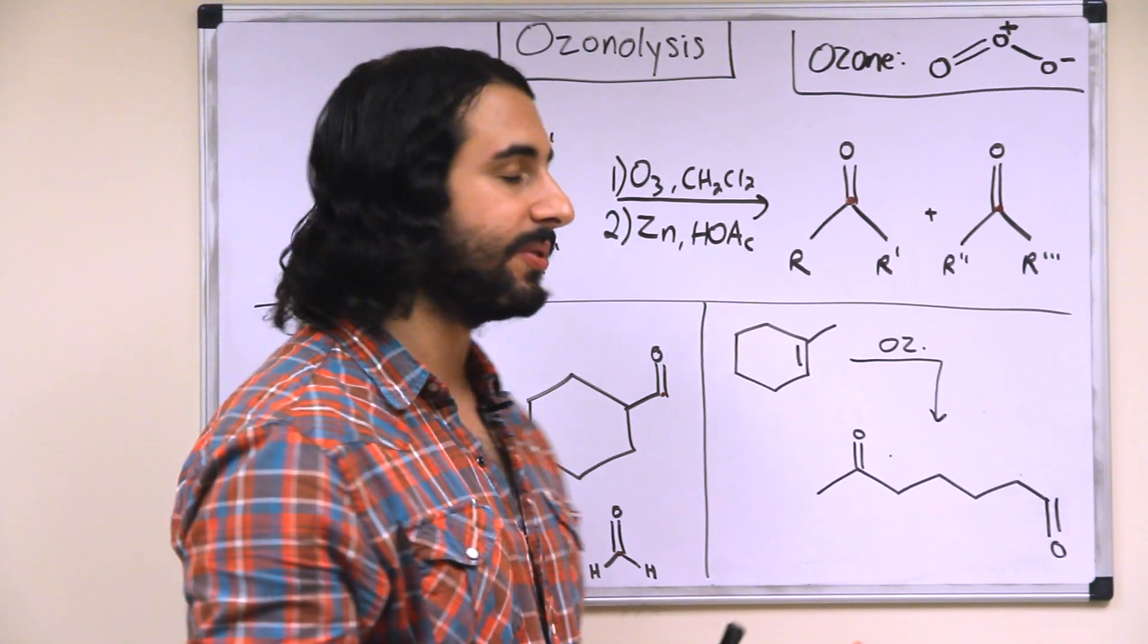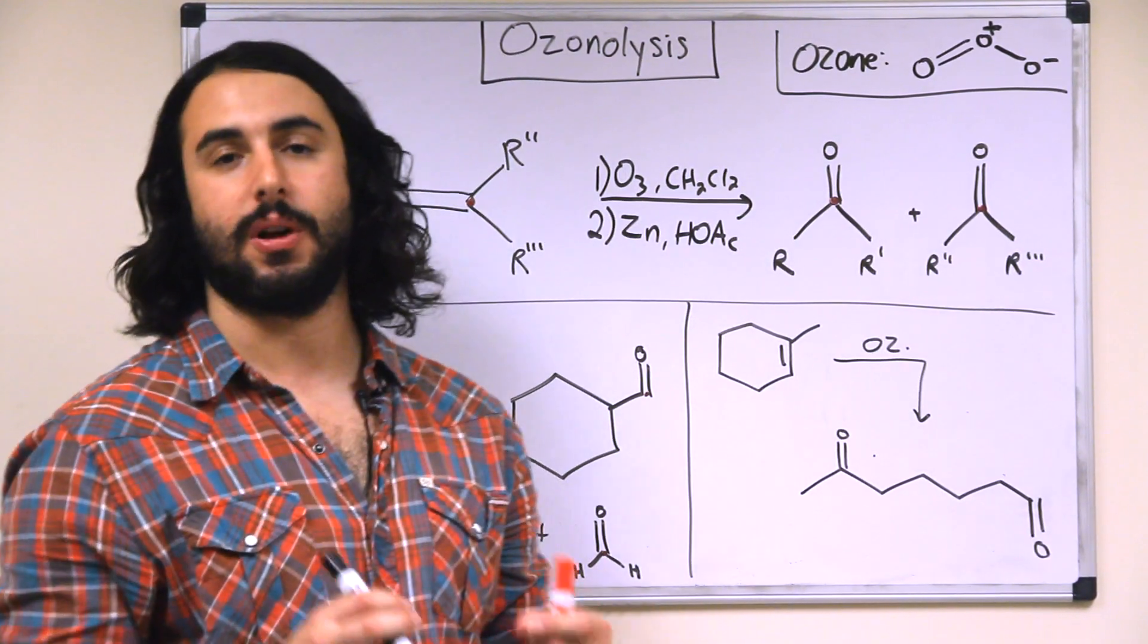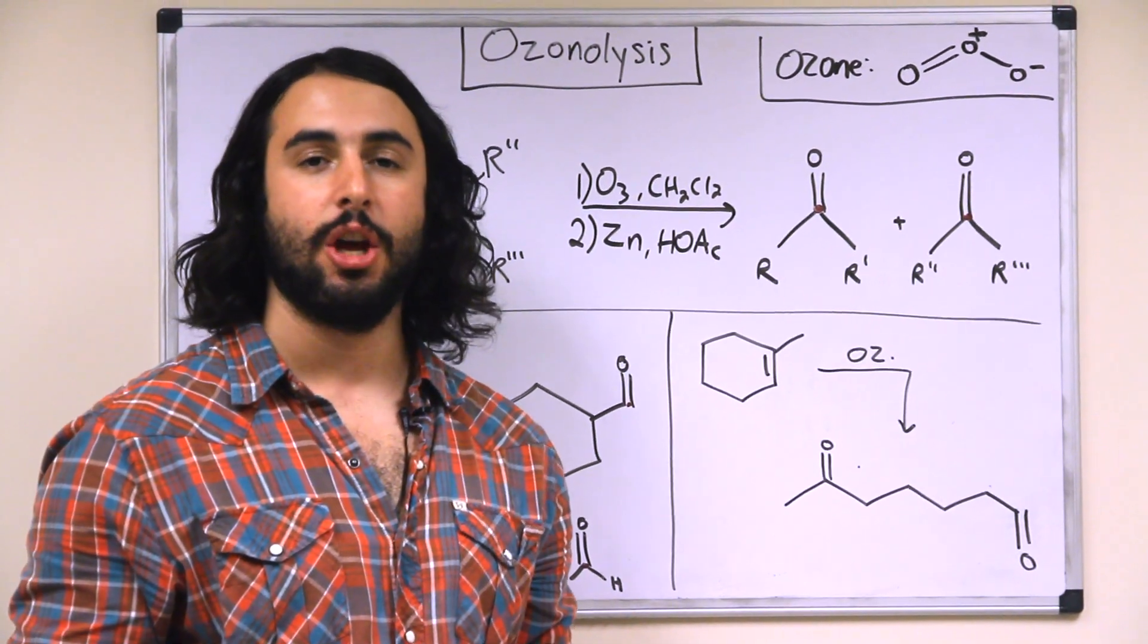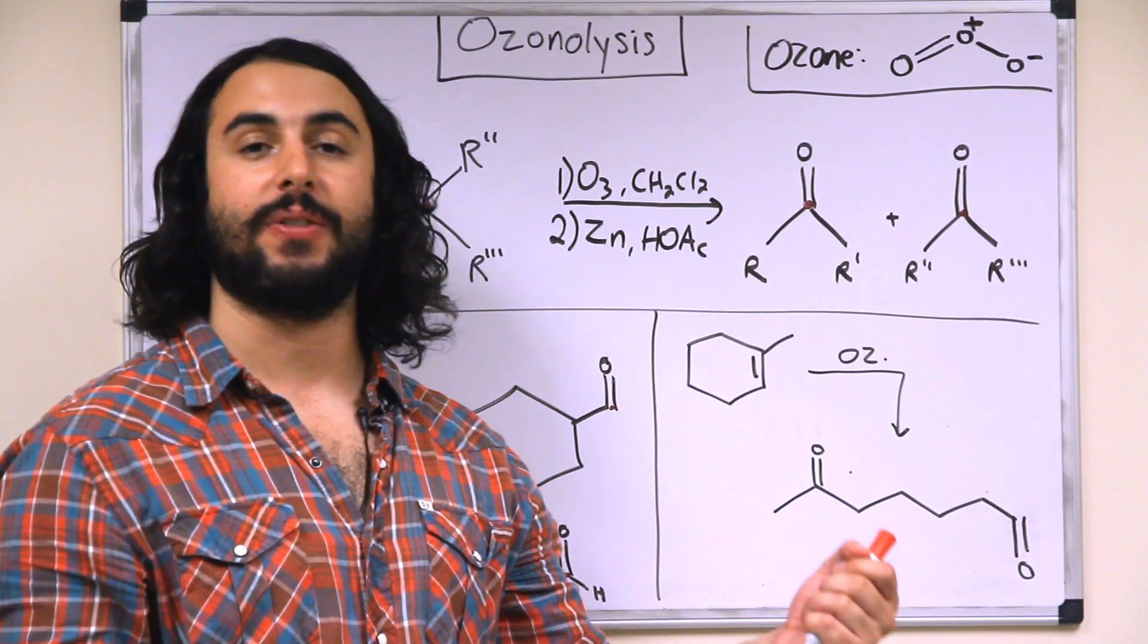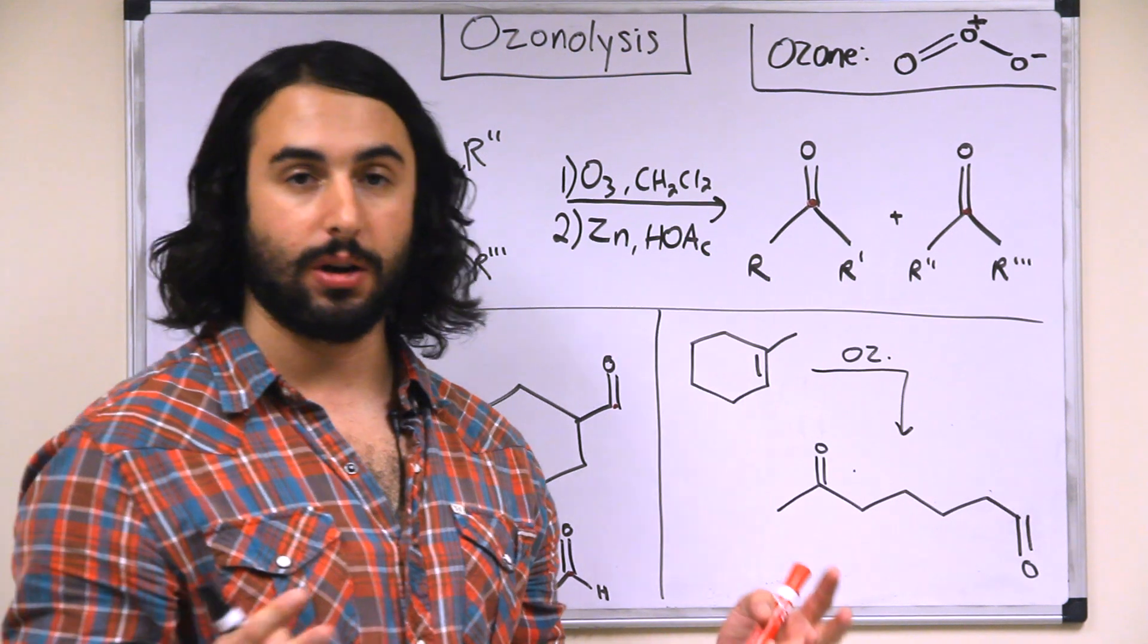The other thing that's interesting about ozonolysis is if you perform ozonolysis on a cyclic alkene, you won't then get two molecules. You will simply pull apart that ring and get one linear product.